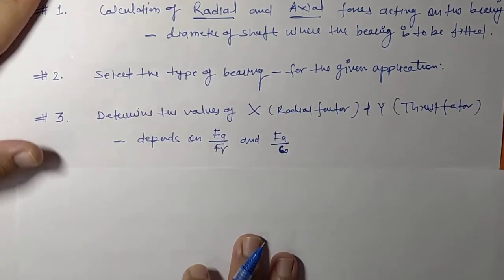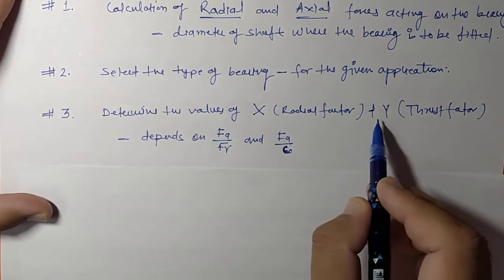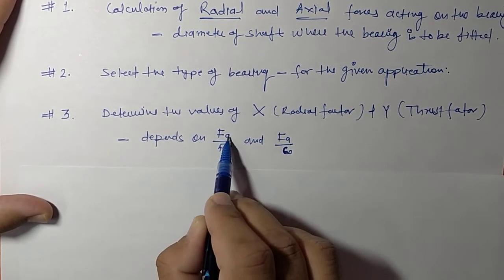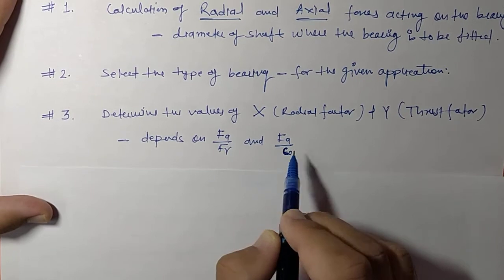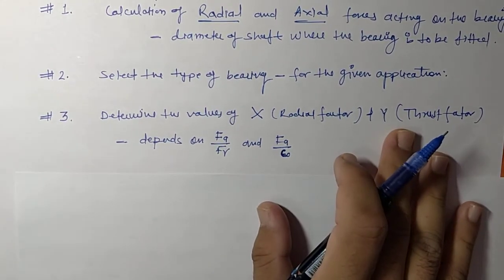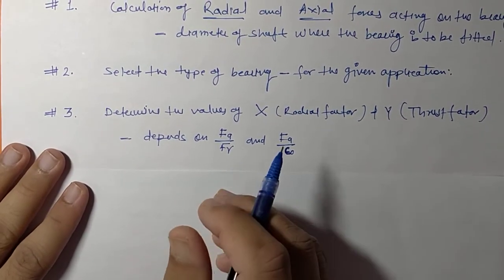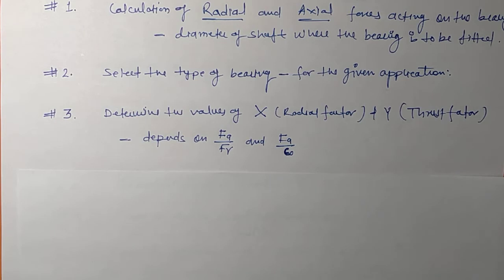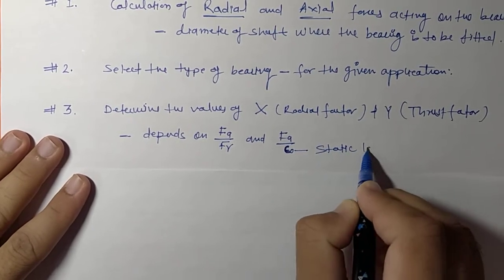The third step is determining the values of X (radial factor) and Y (thrust factor). The values of X and Y depend on the ratio FA/FR, where FA is the axial force and FR is the radial force, and also on FA/C₀, where C₀ is the static load capacity of the bearing.